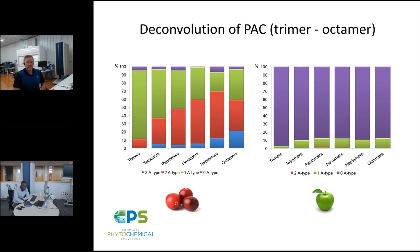Next question: What do you use for a matrix for proanthocyanidins? What we used today was DHB — dihydroxybenzoic acid. In the past we have also used trans-indole acrylic acid. We've been successful with both of those matrices for the identification of proanthocyanidins.